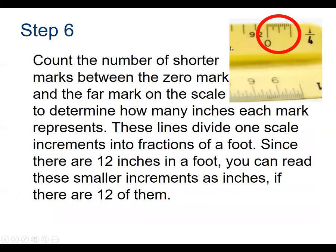Count the number of shorter lines marked between the zero mark and the far mark of the scale. Here's the zero and the end mark — counting up, there are 12 marks. That's going to help you divide the scale into fractions of a foot. Since there are 12 inches in a foot, you can read the smaller increments as inches if and only if there are exactly 12 of them. Because there were 12, we know this scale is marked in inches.